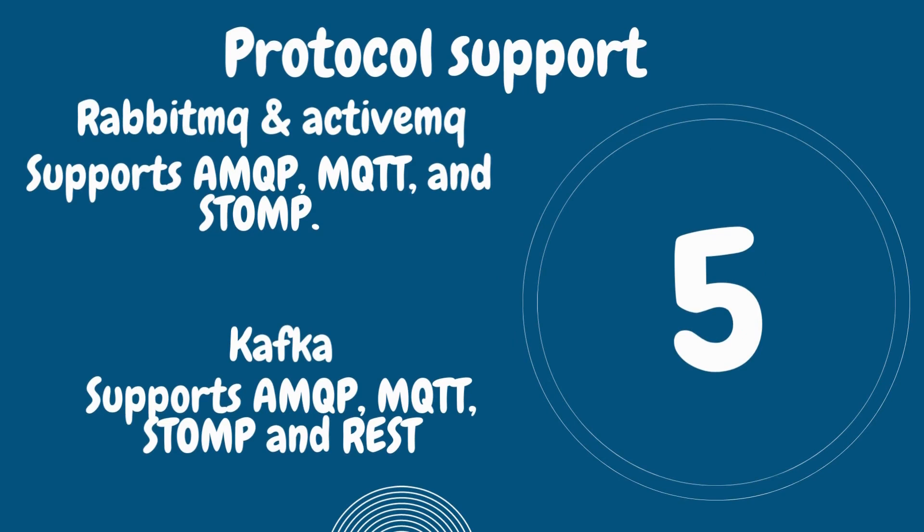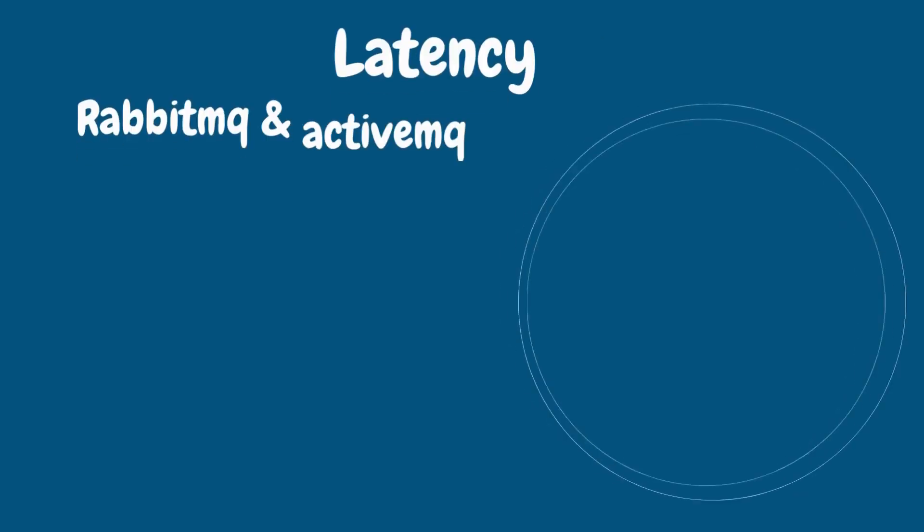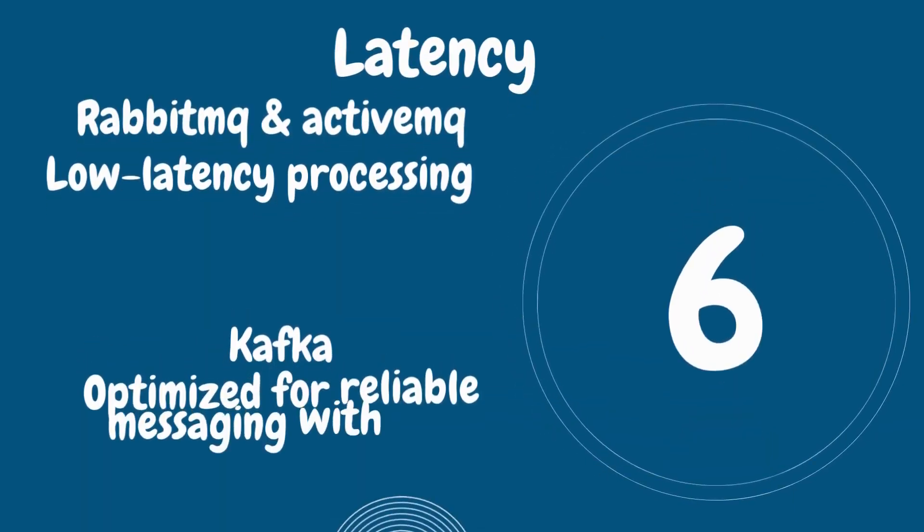Number five is protocol support. RabbitMQ and ActiveMQ support a wide variety of protocols including AMQP, MQTT, and STOMP. Kafka, on the other hand, supports its own binary protocol as well as the REST protocol. This is the main core difference in protocol support.